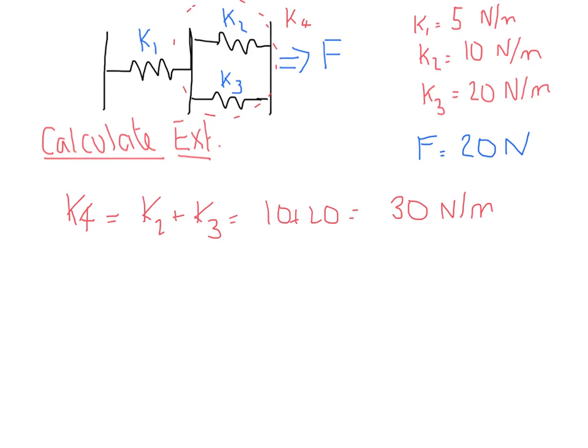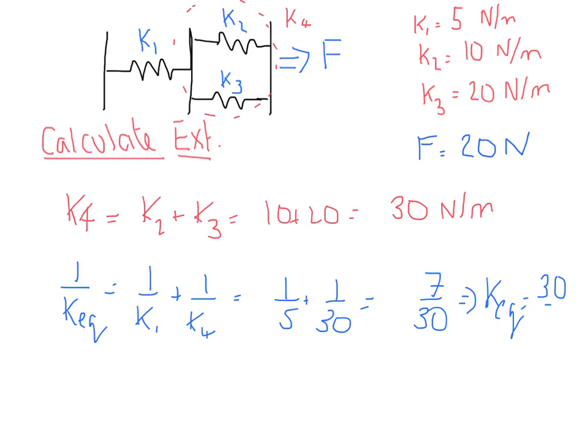So then we want to calculate what our equivalent k is. So it's going to be 1 over k_eq equals 1 over k1 plus 1 over k4, which is going to be 1 over 5 plus 1 over 30. And then there are 6 sets of that, so you'd get 7 over 30, which means your equivalent k is 30 divided by 7.